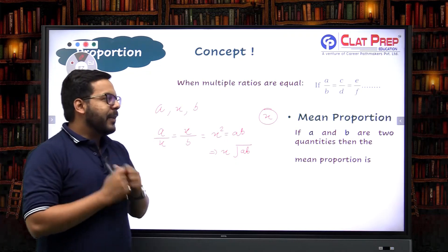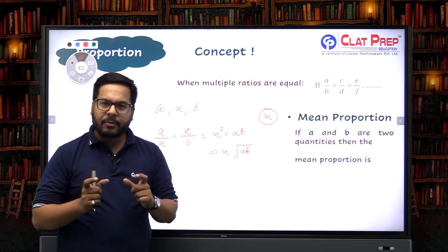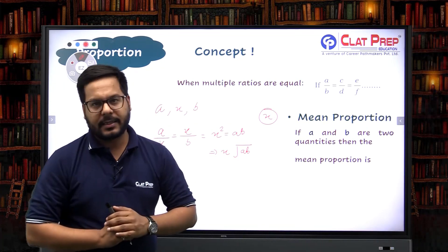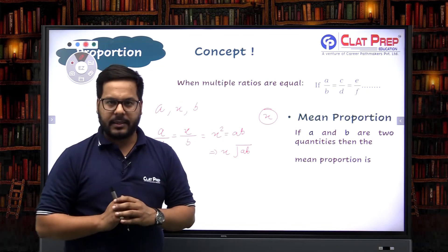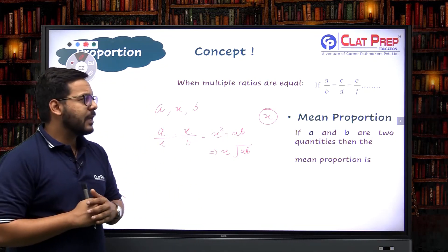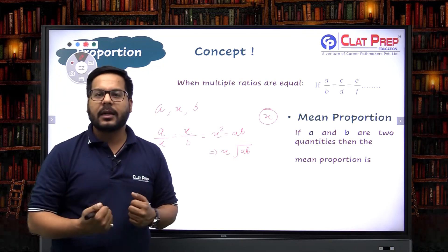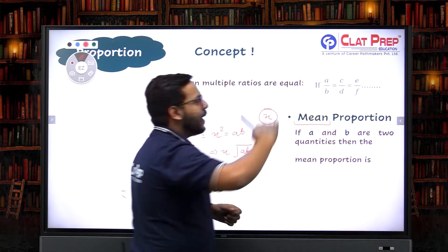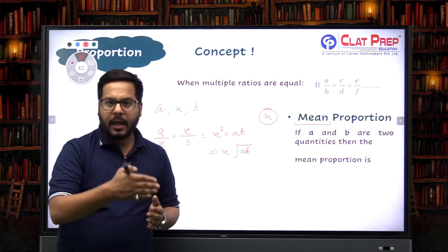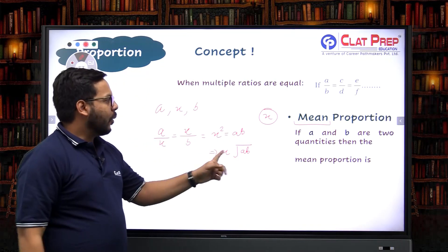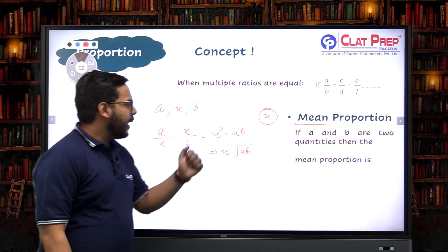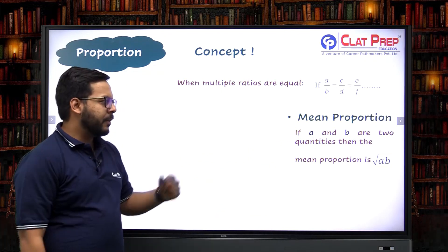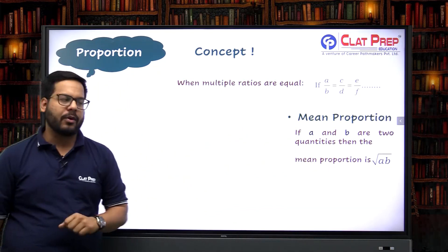Mean proportion means: given two quantities, which number should be inserted between them so that all three quantities are in proportion? It is inserted in the middle — hence the name 'mean proportion.' Mean means middle value. So the mean proportion to A and B is √(AB). Whenever asked, just take the product and its square root.